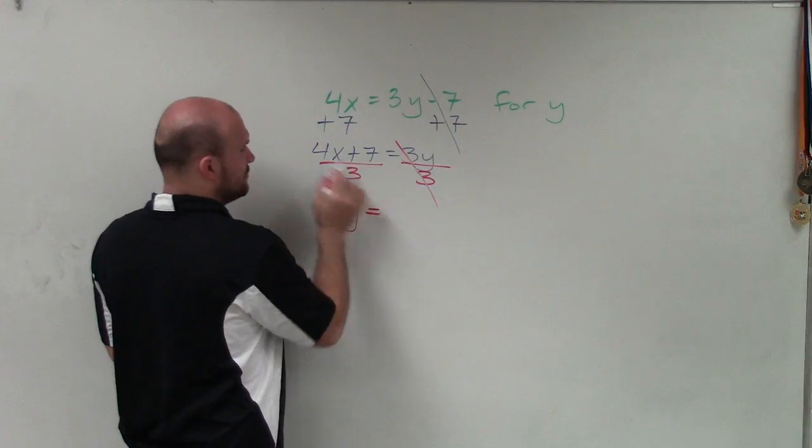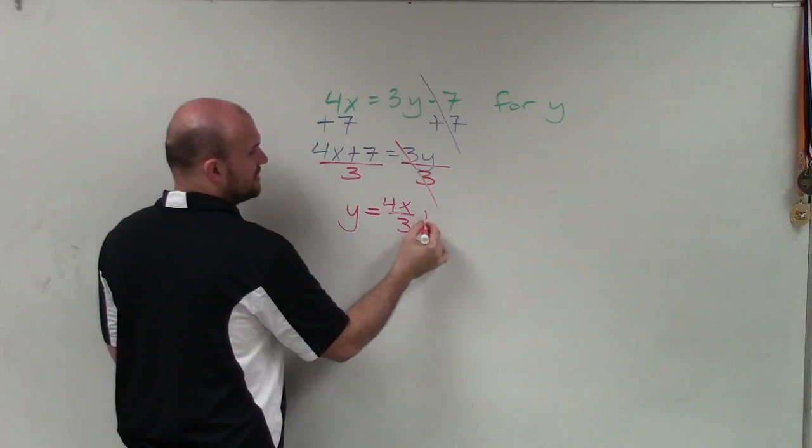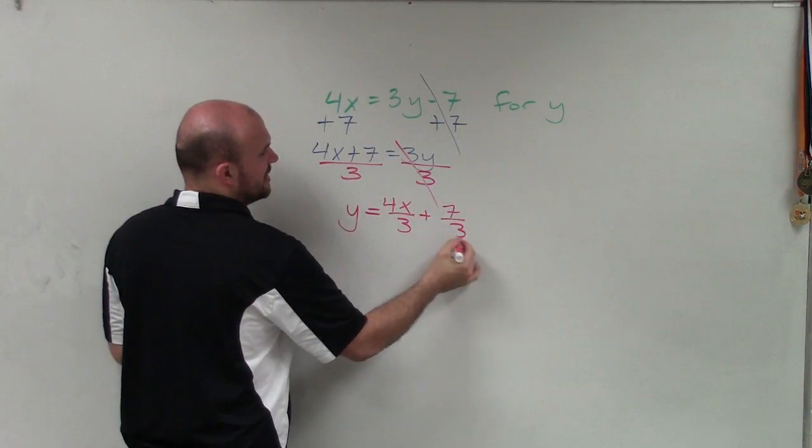So therefore, my final equation is y equals 4x divided by 3, which cannot be simplified, so I'll rewrite that. And then 7 divided by 3 cannot be simplified either, so I'll just rewrite that as 7 thirds.